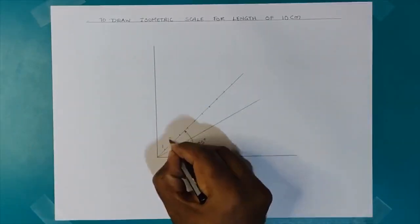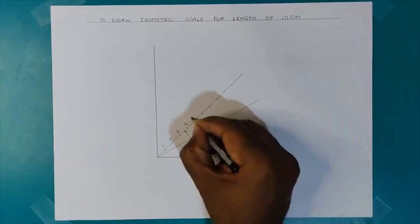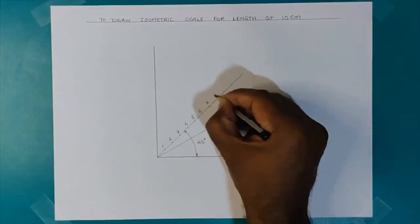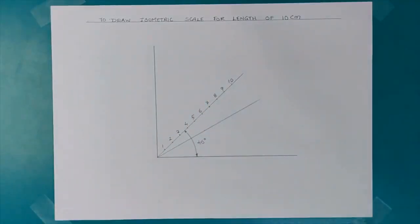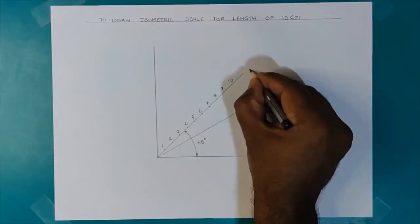Next, I will name the divisions 1, 2, 3, 4, 5, up to 10, and these are the true lengths.